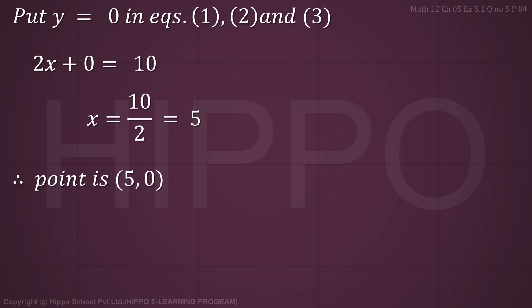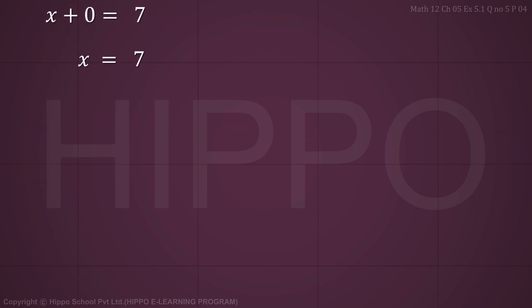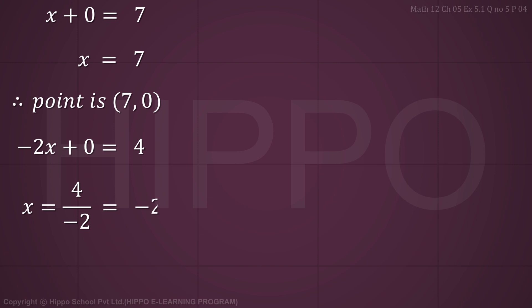For equation 2, put y equals 0: x plus 0 equals 7, so x equals 7. The point is (7, 0). For equation 3, put y equals 0: minus 2x plus 0 equals 4, so x equals 4 divided by minus 2, which equals minus 2. The point is (−2, 0).